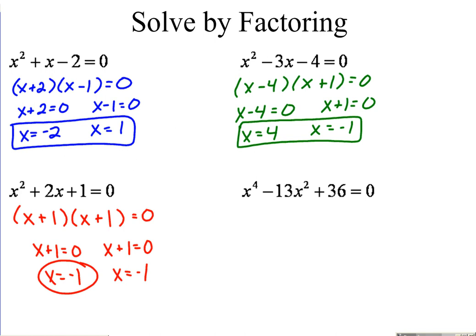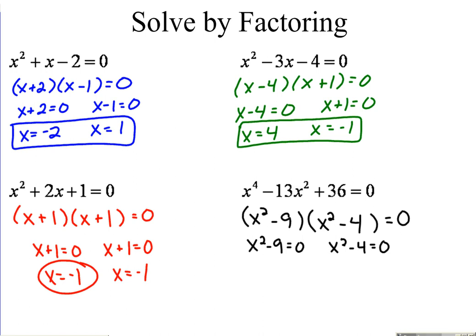The fourth problem is a degree-four equation. However, because it's a trinomial in quadratic form — the same structure as the other equations — we can still factor it. This time, the first terms must multiply to give x to the fourth rather than x squared, so we use x squared in each binomial. We still need numbers that multiply to be 36 and add to be negative 13 — those are negative nine and negative four. Once factored, set each factor equal to zero, and we have a bit more work to do.